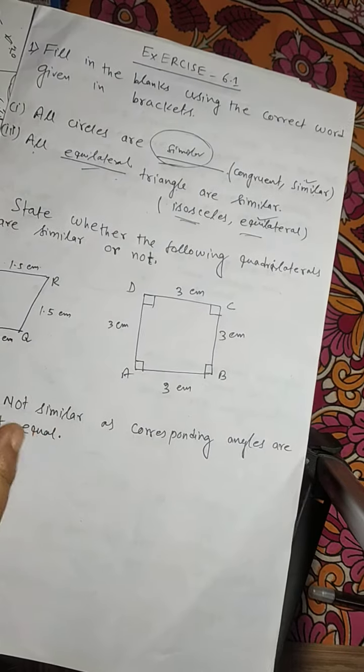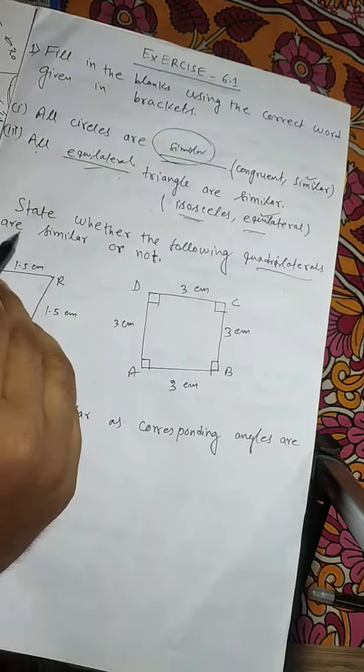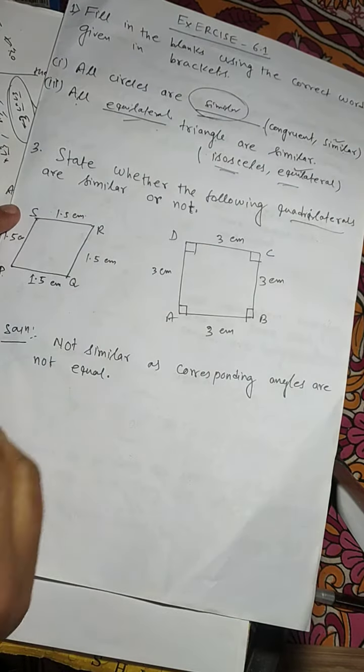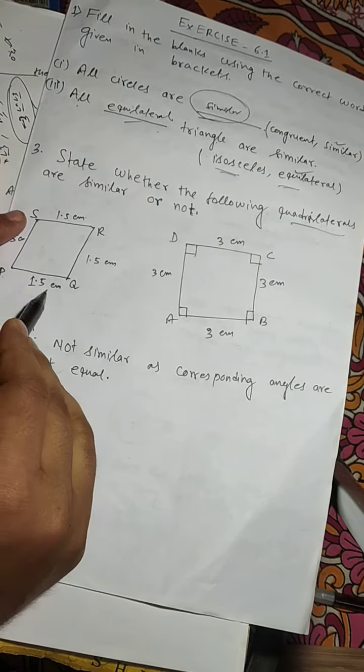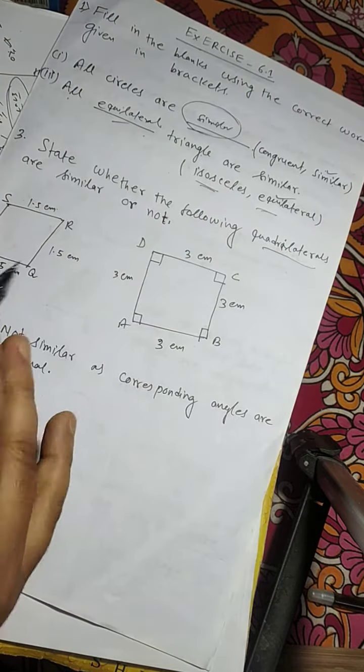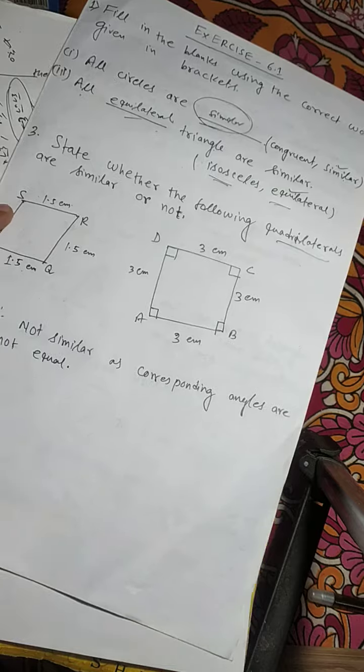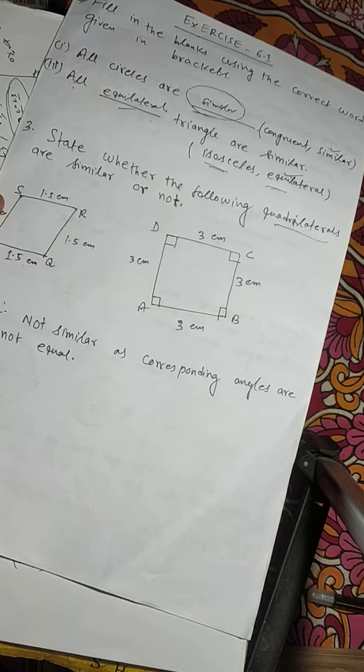Question number three: State whether the following quadrilaterals are similar or not. PQRS is a rhombus with sides of 1.5 cm, and ABCD is a square with sides of 3 cm. By the note, we can say they are not similar as corresponding angles are not equal.